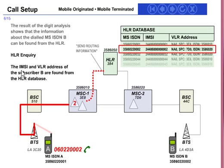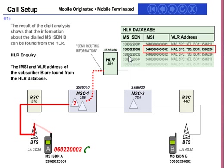The fifth step: HLR inquiry — the MSC and VLR address of subscriber B are found from the HLR database. Subscriber B has MSISDN number triple-zero-two. The HLR checks, from this MSISDN number, what the MSC and VLR address of MSISDN B are.